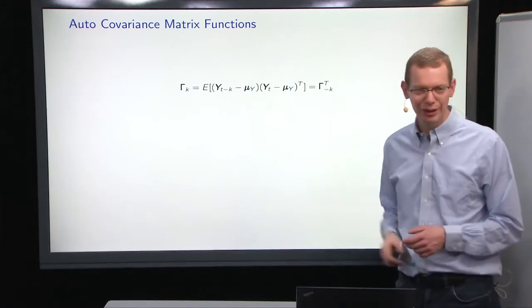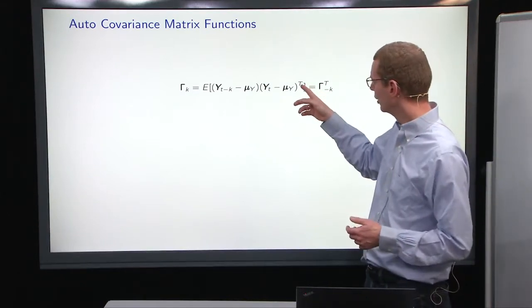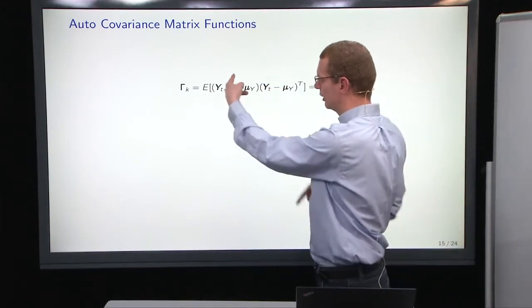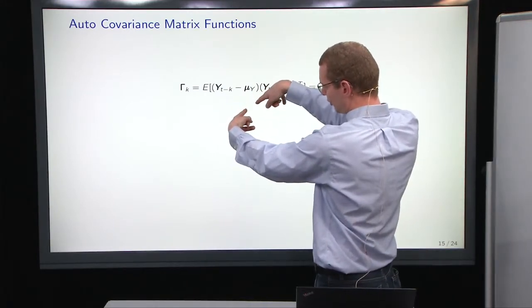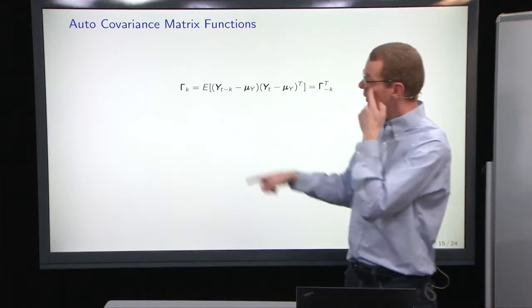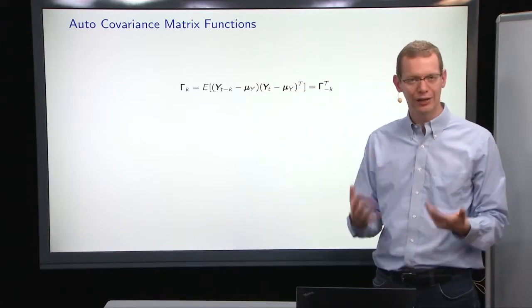That also means that we need to take the transpose of one element to get a covariance matrix. So you have a column vector here and you have a row vector here after transposing it, and then you get a covariance function at that point in time.